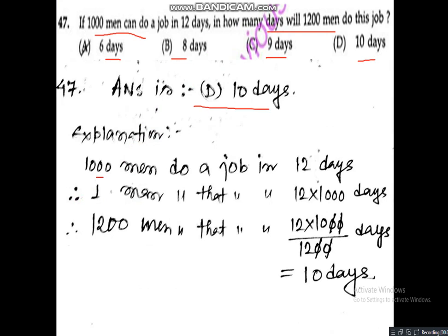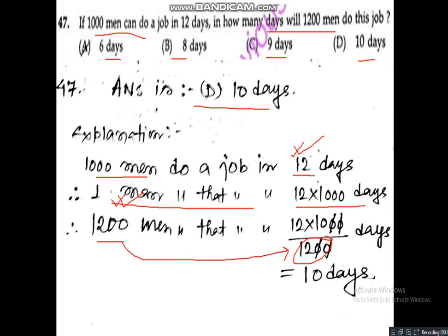To solve this: 1000 men do a job in 12 days, so one man will take more days — that is 12 multiplied by 1000. Similarly, if now 1200 men work, it will take less time, so divide by 1200. The answer is 12 × 1000 ÷ 1200 = 10 days. Correct answer is Option D, 10 days.